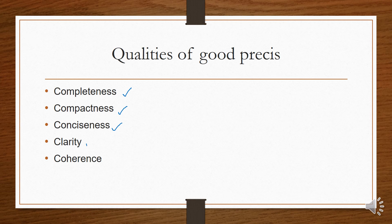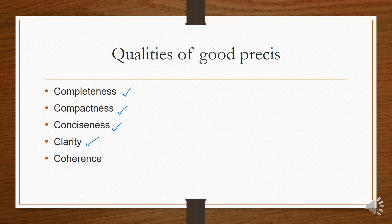The fourth quality is clarity. When writing a précis, don't use overly tough or complex wording. You may change the wording and use synonyms, but your lines must have clarity. When the examiner reads your précis, it should be clear that you have defined a lengthy paragraph in a shorter way without making your ideas complex.